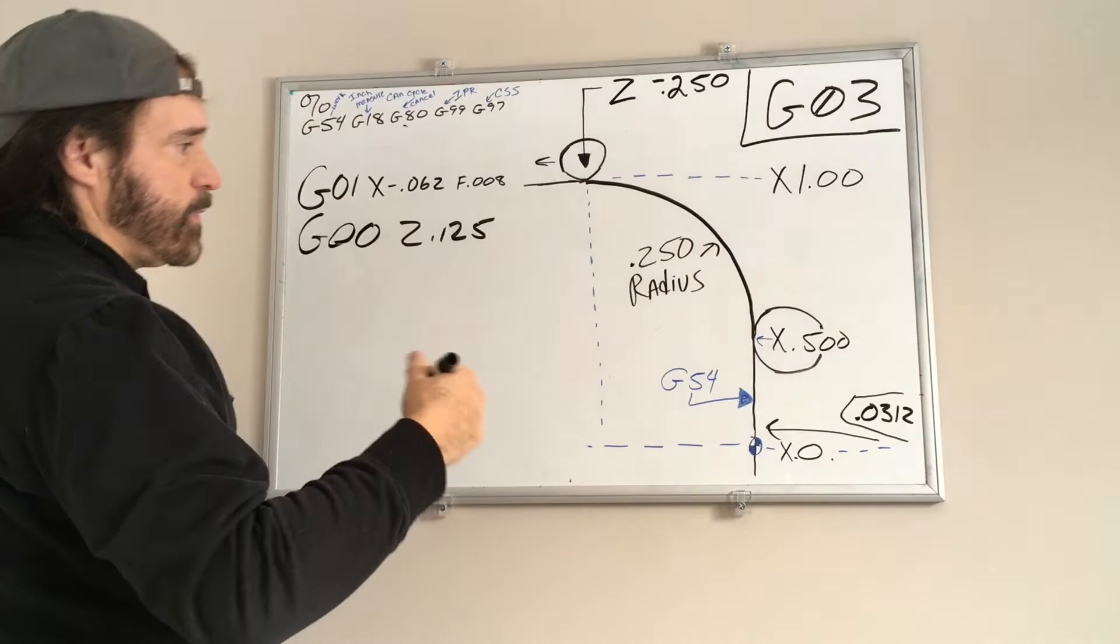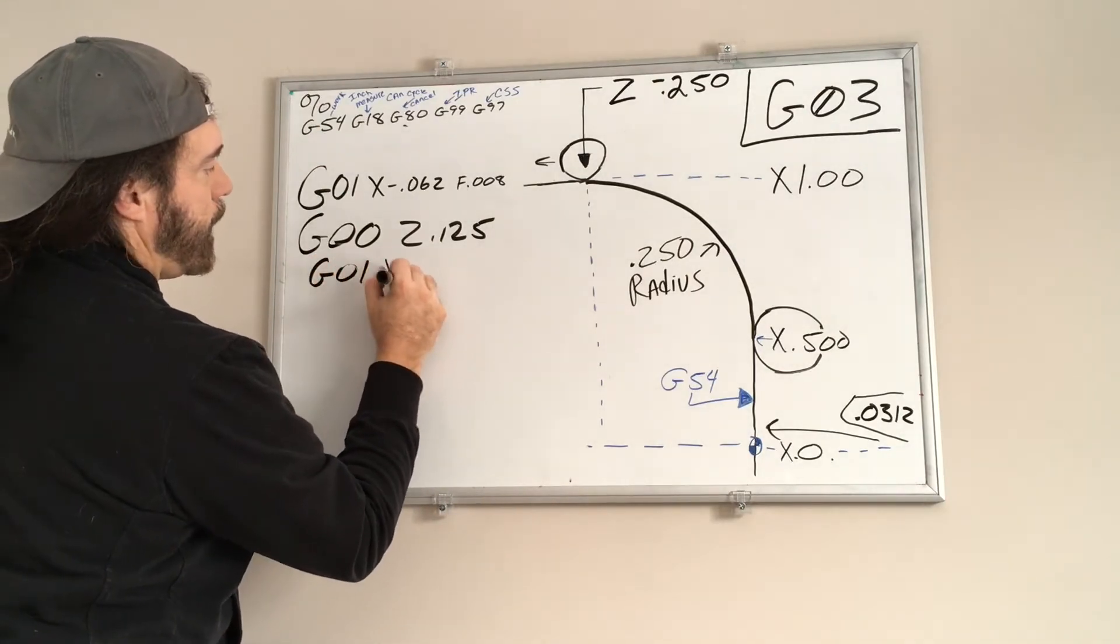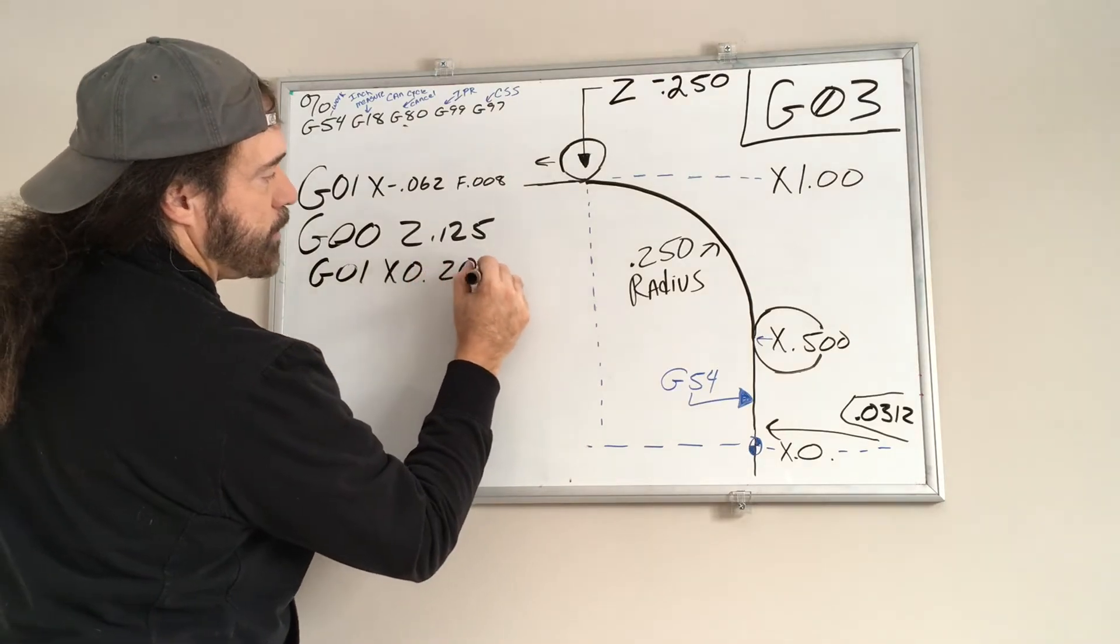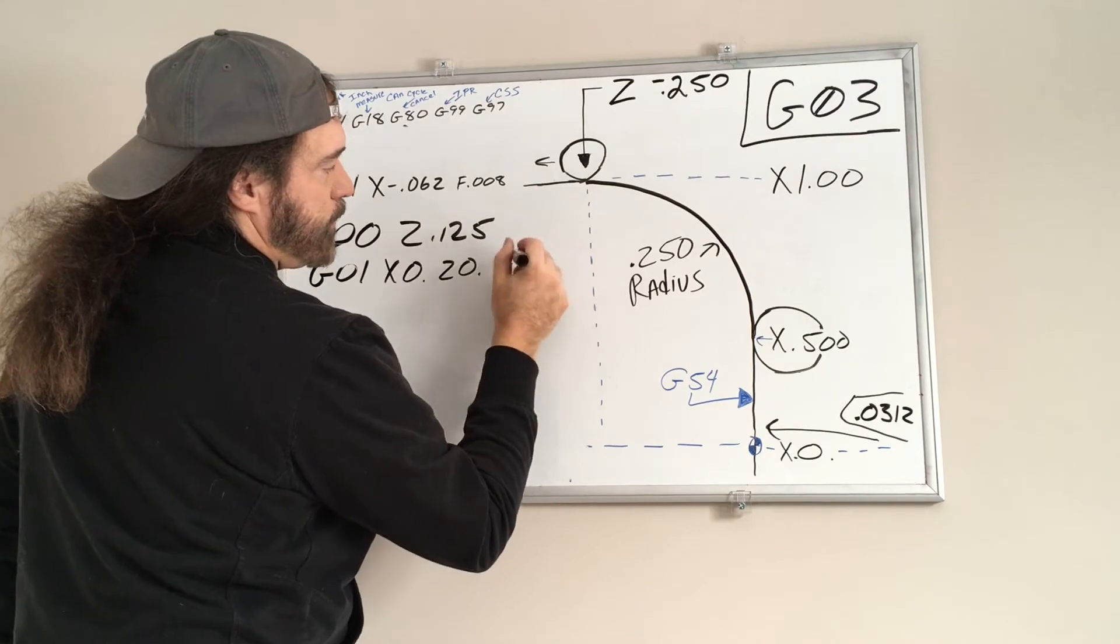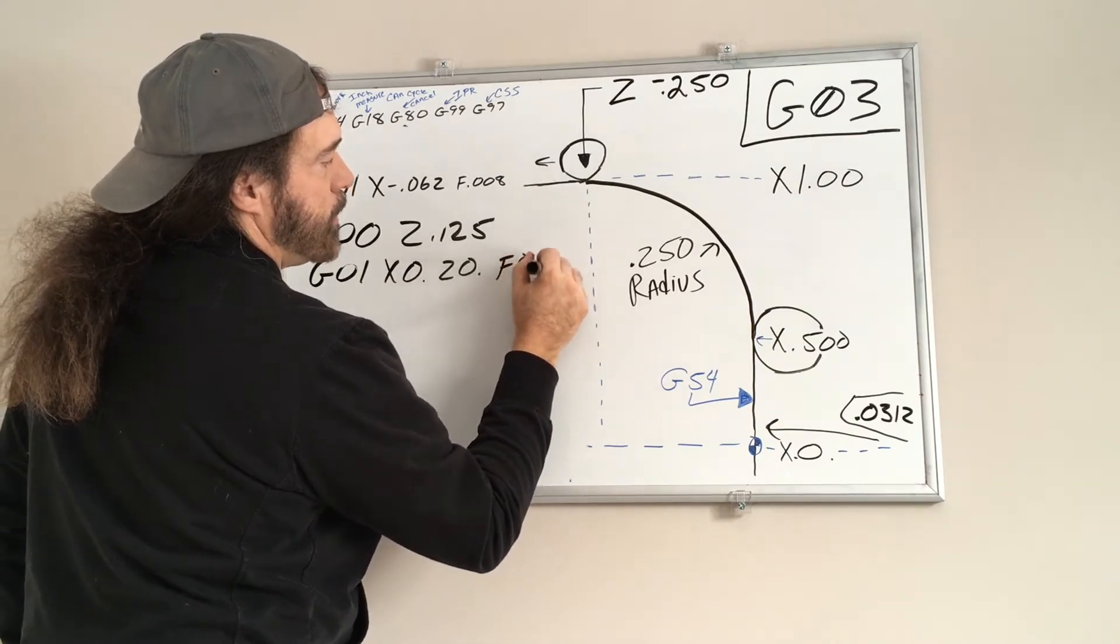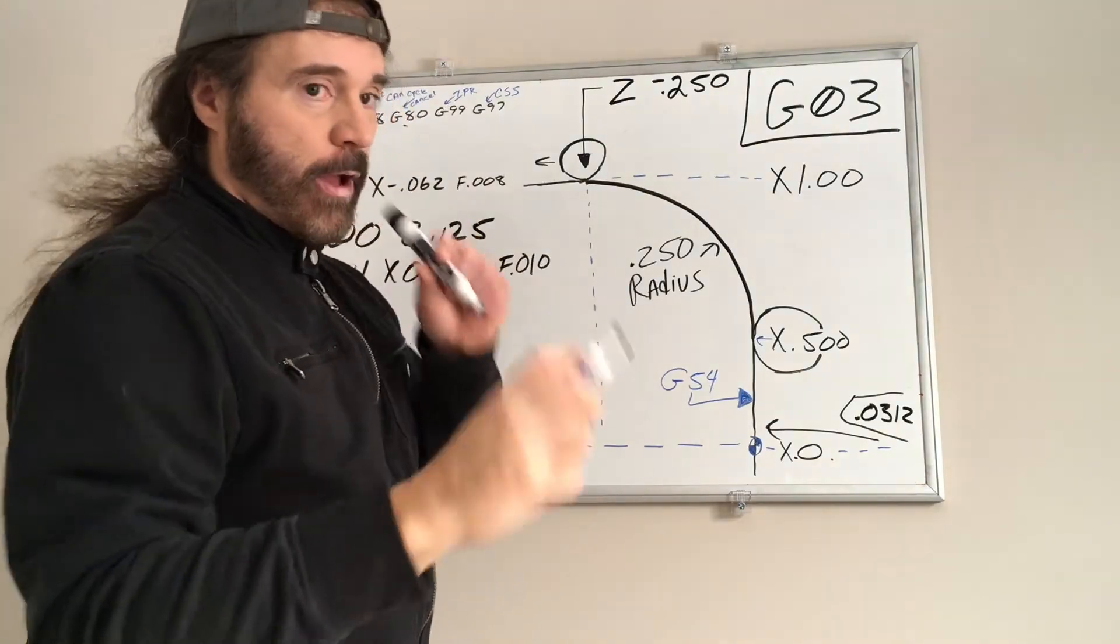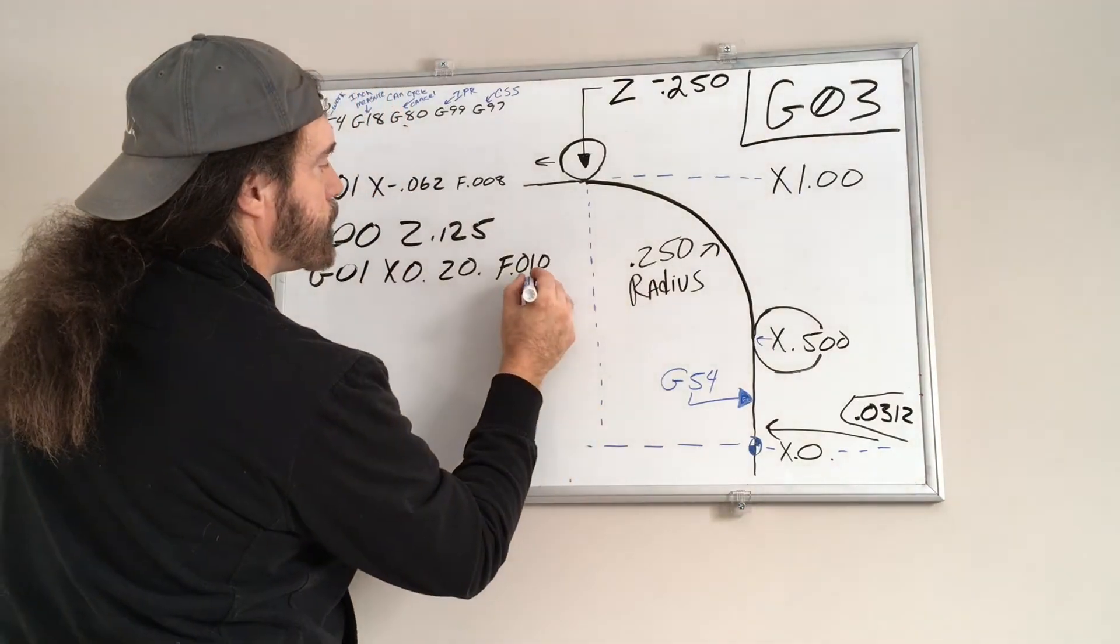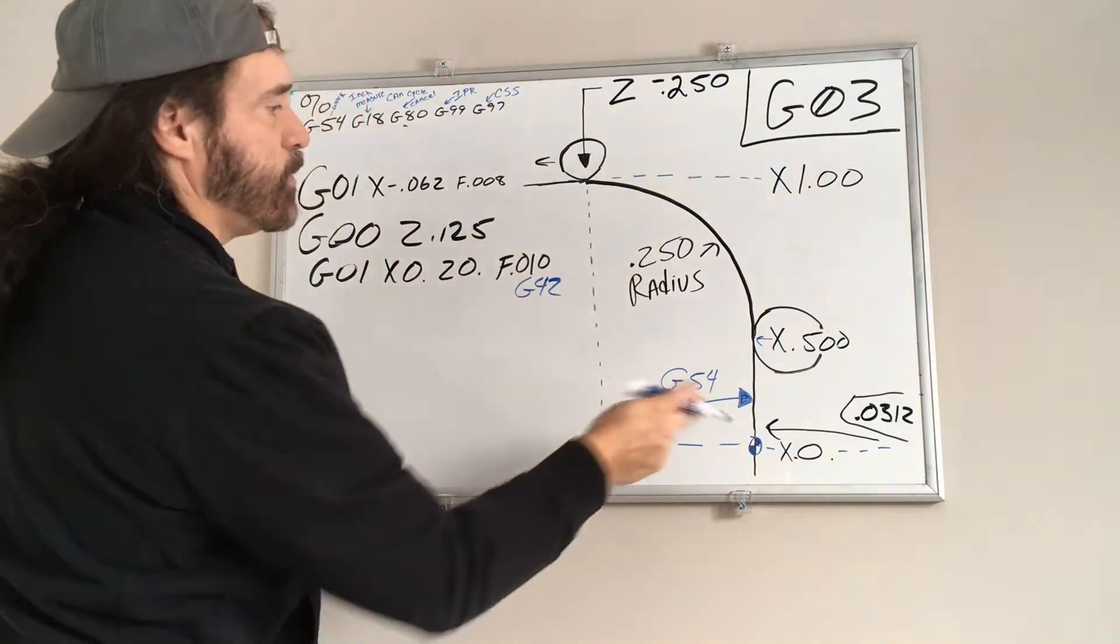And now we're going to feed in G01, X 0, Z 0 and we're going to do a feed rate of 10 thousands.